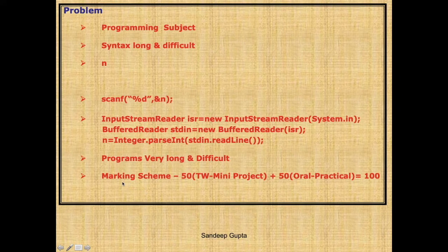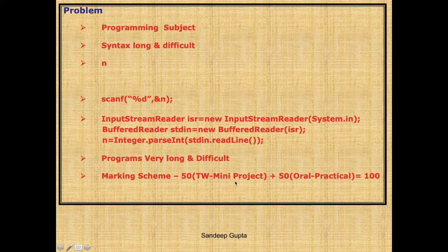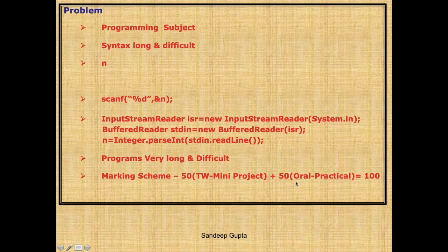As a result of all these things, programs in Java become very long and very difficult. Now let's talk about the marking scheme. For most streams, Java is for 100 marks where 50 marks are for term work and 50 marks are for oral and practical. In the term work you are supposed to create a mini project. Most students struggle with this, but in our Java course we will do five projects - the last two are good enough to submit as your college mini project.